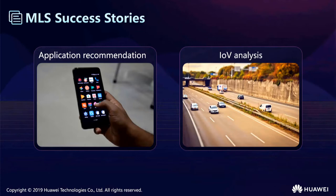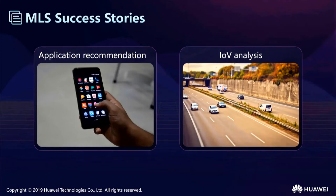There are two very successful cases so far: an application market and an LV big data platform. MLS is used to recommend applications in the app market — such as music, news, and games — improving CTR by 13%. On the LV big data platform, MLS is also used to collect vehicle data such as engine speed, retention speed, temperature, tire pressure, and virtual speed, to create a prediction model and provide predictive maintenance schedules for the enterprise and drivers, thereby reducing costs.